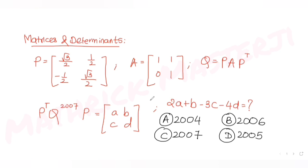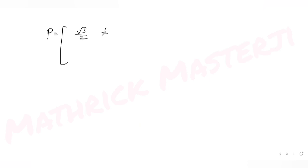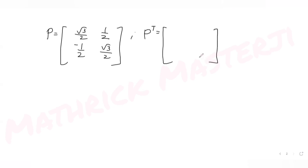Let's see the solution. We have matrix P with elements √3/2, 1/2, -1/2, and √3/2. Finding the transpose of P gives us elements √3/2, -1/2, 1/2, and √3/2.